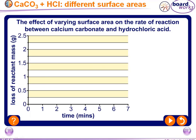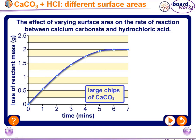Now we collect the data — the loss in mass of the mixture versus time — and draw a graph for both experiments: small pieces and large pieces. The y-axis shows loss of reactant mass in grams and the x-axis shows time. We use the marble chips in large size first, so the surface area is lower.